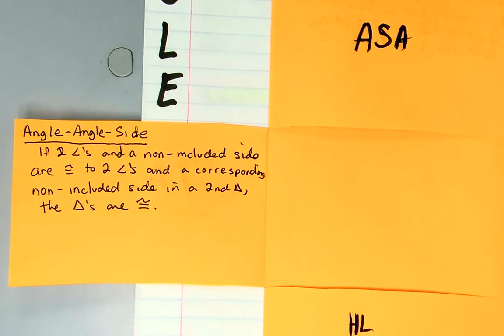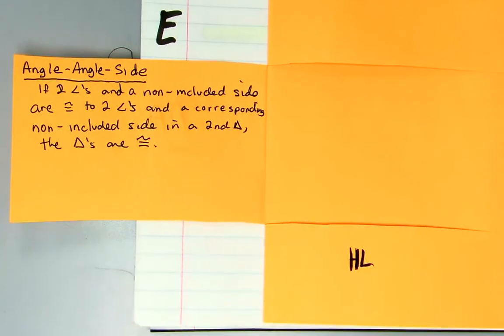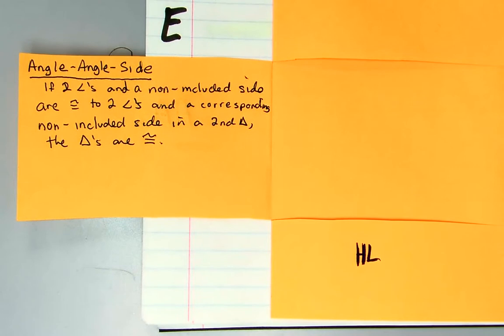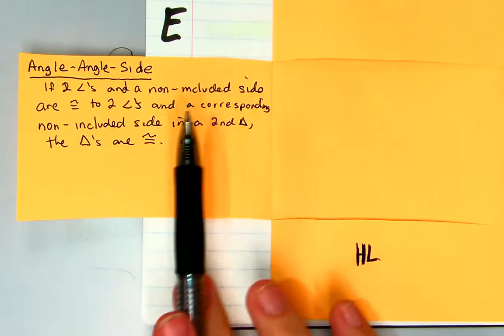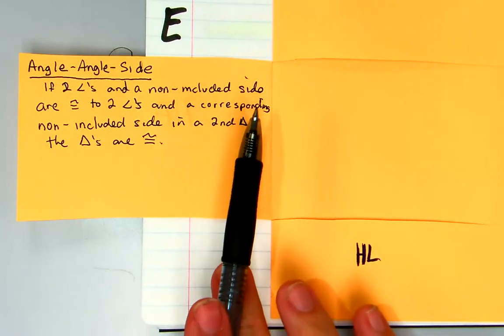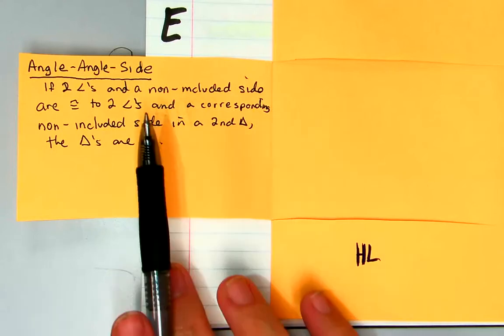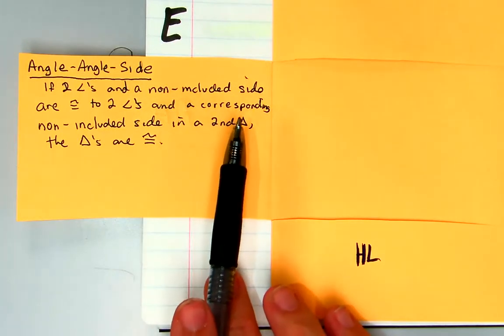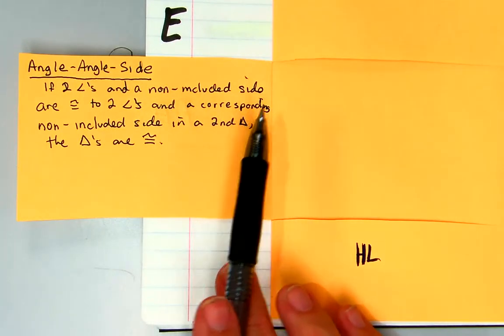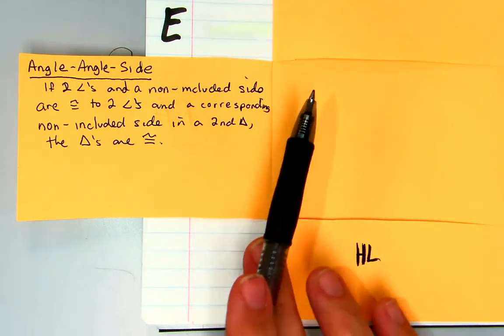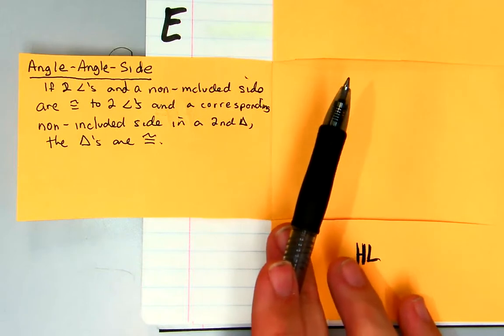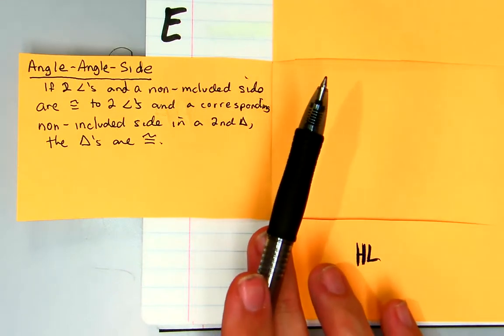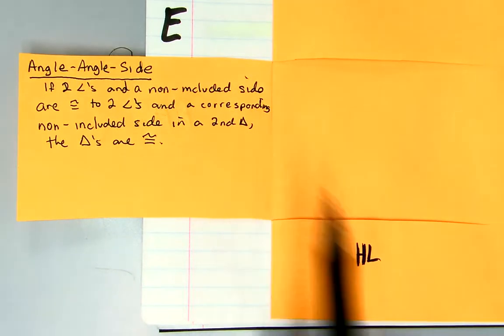This one's just a little bit different. I'll move that up just a little bit. In a triangle, if two angles and a non-included side - so it's not the side that's in between the two angles, it's going to be one of those two other sides - if they're congruent to basically the same parts in another triangle, two angles and that same non-included side, then those triangles are going to be congruent. That goes back to the relationship between the sides and the angles for the triangles.